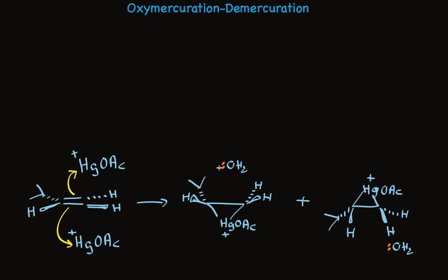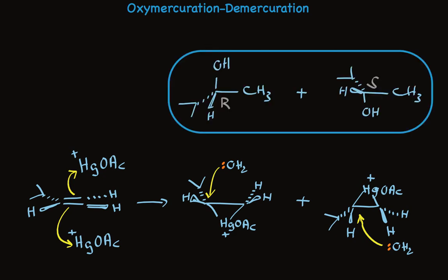In the second step of this reaction, water adds from the backside — either from above with the intermediate on the left, or from below with the intermediate on the right. In either case, it's regioselective, and the subsequent steps that lead to product form enantiomers. The one on the left leads to the R enantiomer, and the one on the right leads to the S enantiomer. Because it's equally likely that the mercury will react from above or from below, we make equal amounts of these two enantiomers — a racemic mixture.